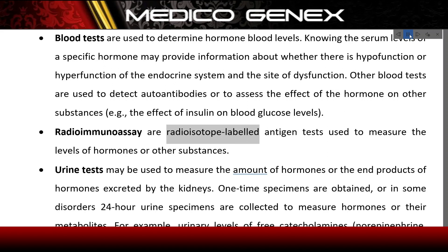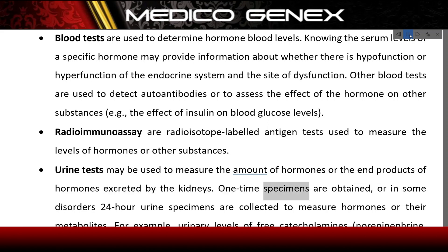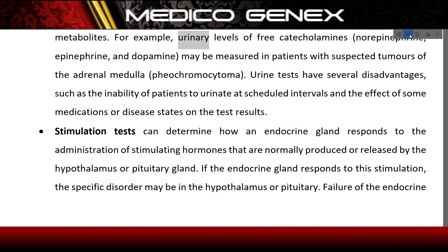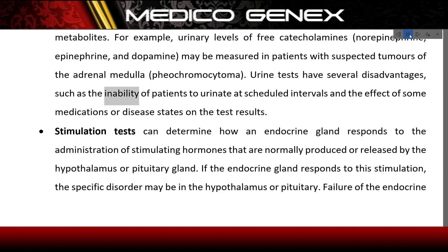Radioimmunoassays are radioisotope-labeled antigen tests used to measure the levels of hormones or other substances. Urine tests may measure the amount of hormones or end products of hormones excreted by the kidneys; one-time or 24-hour urine specimens may be collected. For example, urinary levels of free catecholamines — norepinephrine, epinephrine, and dopamine — may be measured in patients with suspected tumors of the adrenal medulla such as pheochromocytoma. Urine tests have disadvantages including patient inability to urinate at scheduled intervals and the effect of medications or disease states on results.